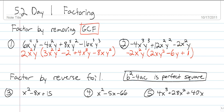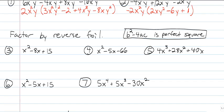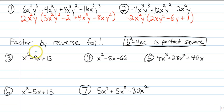Now the second thing we're going to be doing is reverse FOIL. This is when you're trying — remember, FOIL is when you're multiplying two binomials together — now you're going to try to get them back to those binomials. You know you can factor something if the discriminant, which is b squared minus 4ac, is a perfect square. For instance, let's look at number 3. Remember, b is the middle term, c is this number, and a is the number in front.